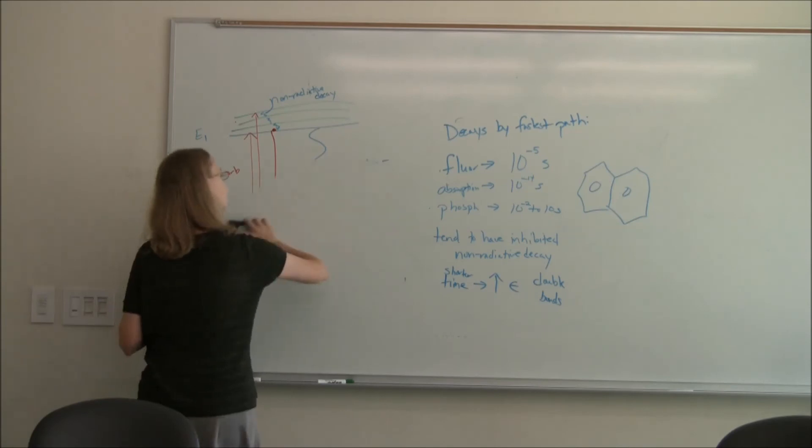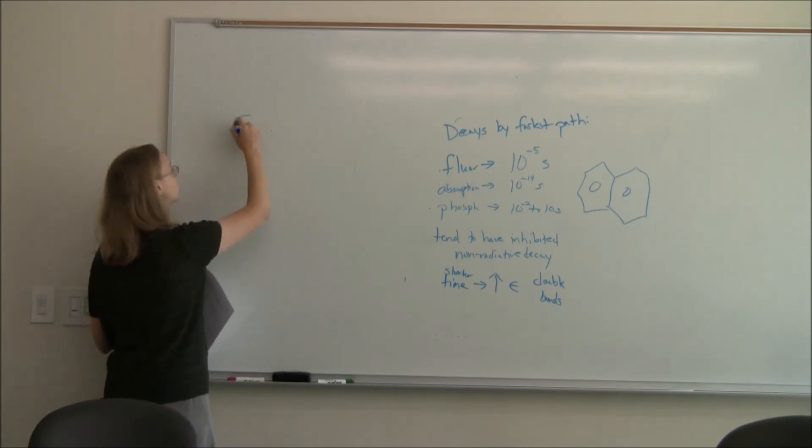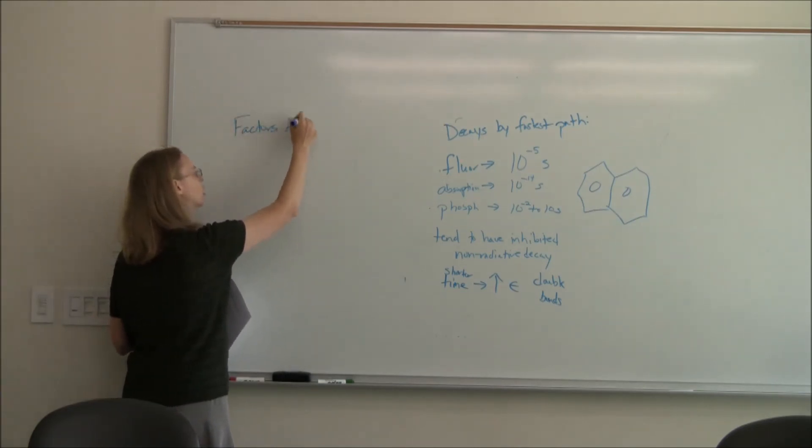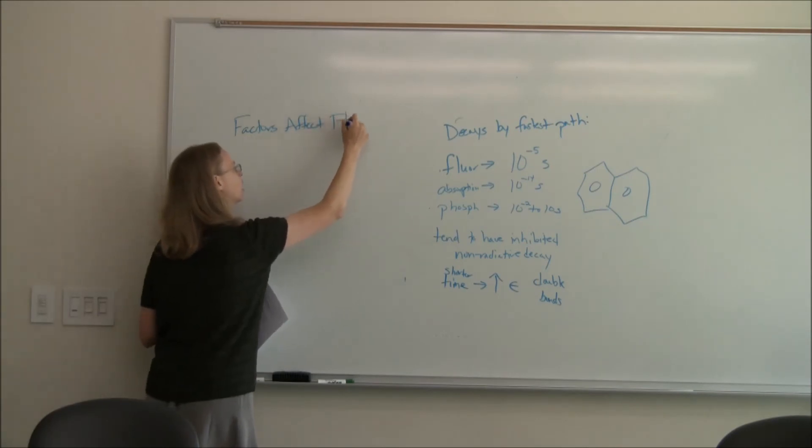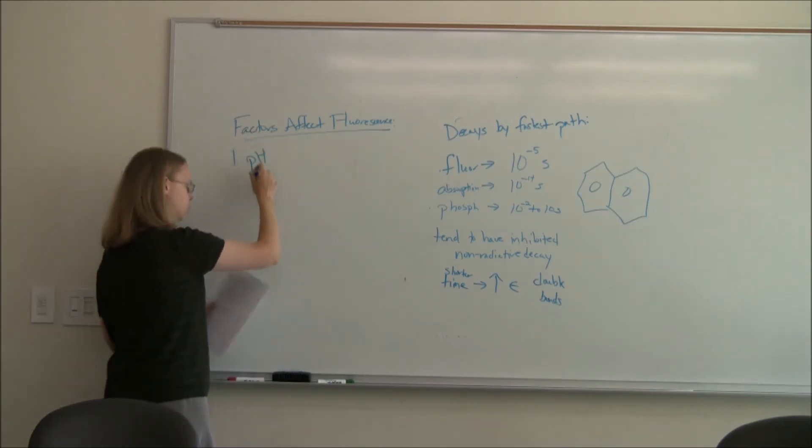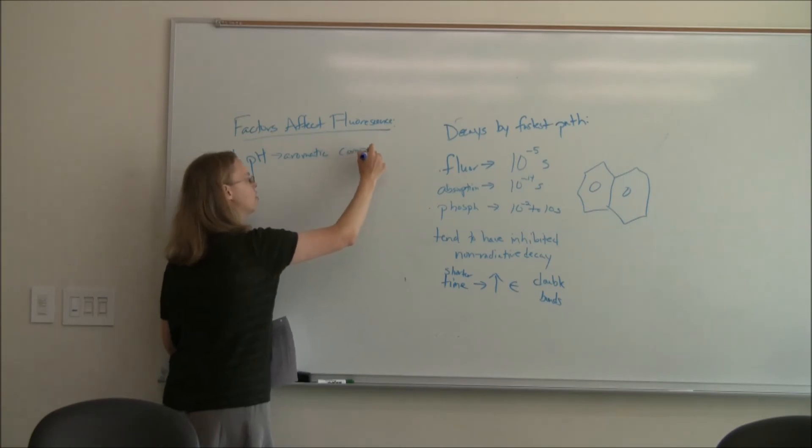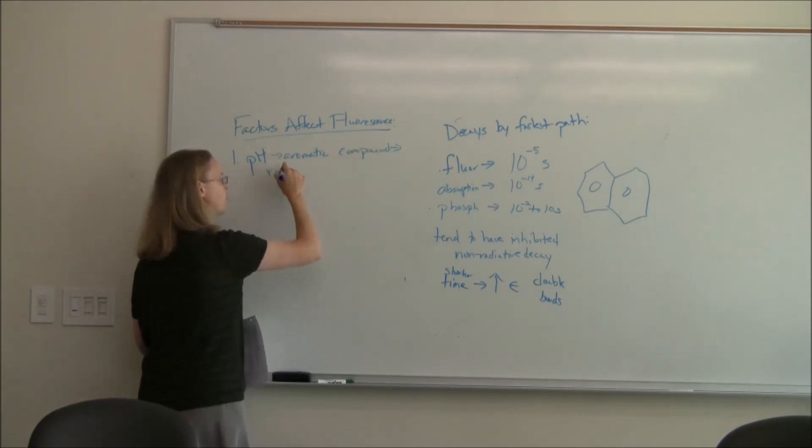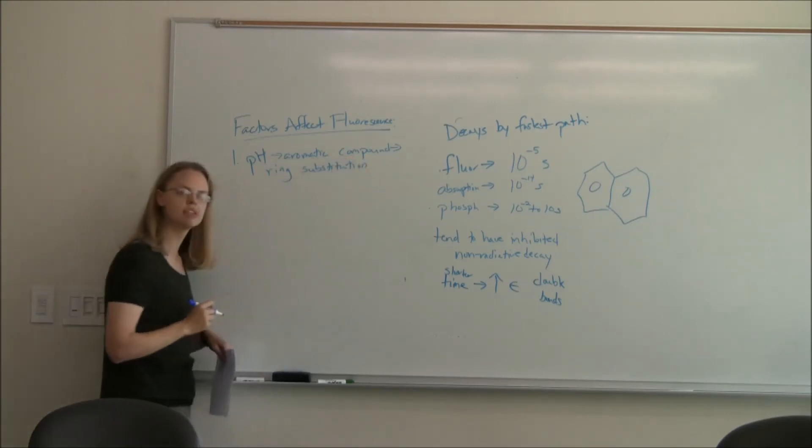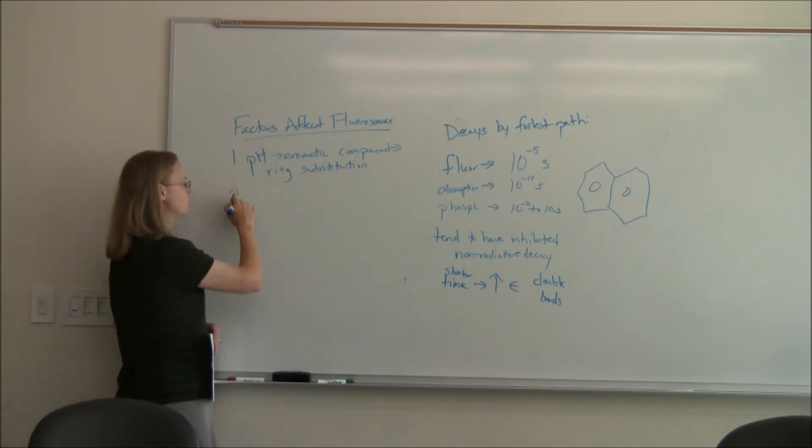They're not fluorescent because the fluorescence is slow compared to the non-radiative decay. Now there's lots of factors that affect fluorescence. These include pH. Especially if you have like an aromatic compound and you change the pH, if you get some sort of ring substitution or chemical reaction going on, that could obviously change the molecule and that could change the amount of fluorescence that you would get.